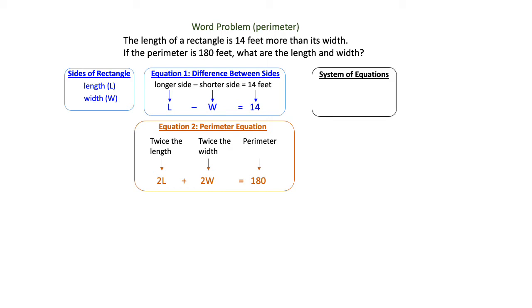So now I have a system of equations. I have one that shows the length and width have a difference of 14, and I also have a perimeter equation set equal to 180.